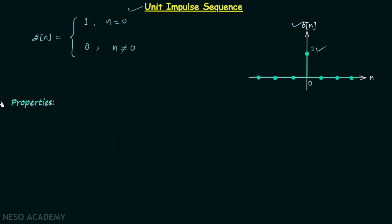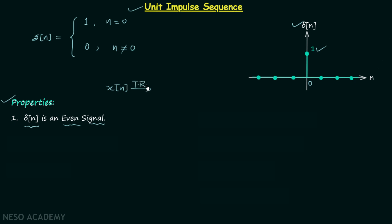Now let's move on to the properties of delta[n]. According to the first property, delta[n] is an even signal. We know that if there is a discrete time signal x[n] and we perform the time reversal operation to get x[-n], and if x[-n] equals x[n], then we say x[n] is an even signal. Therefore, if delta[n] is an even signal, delta[n] must equal delta[-n].